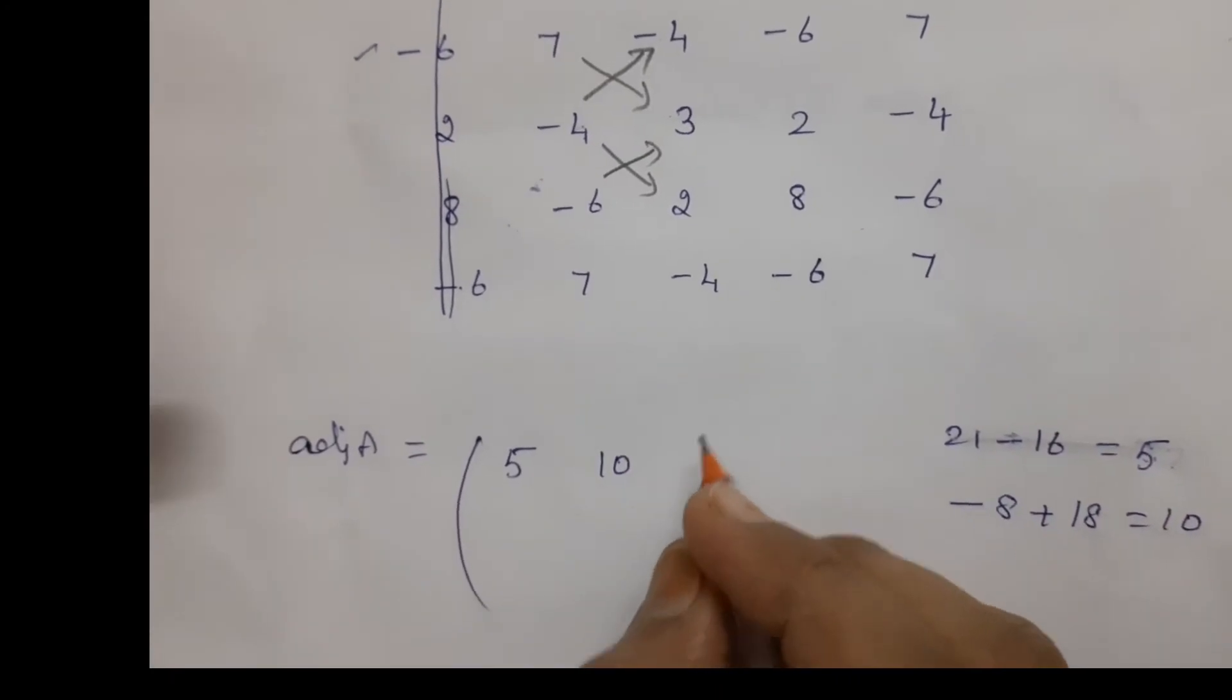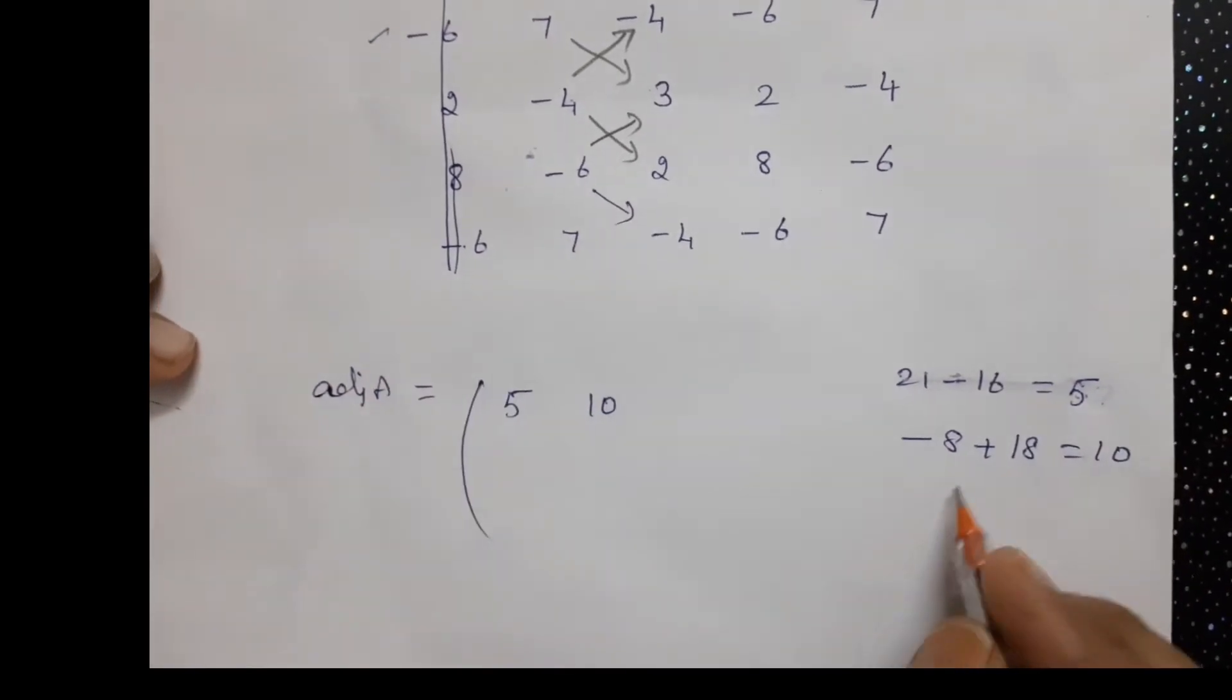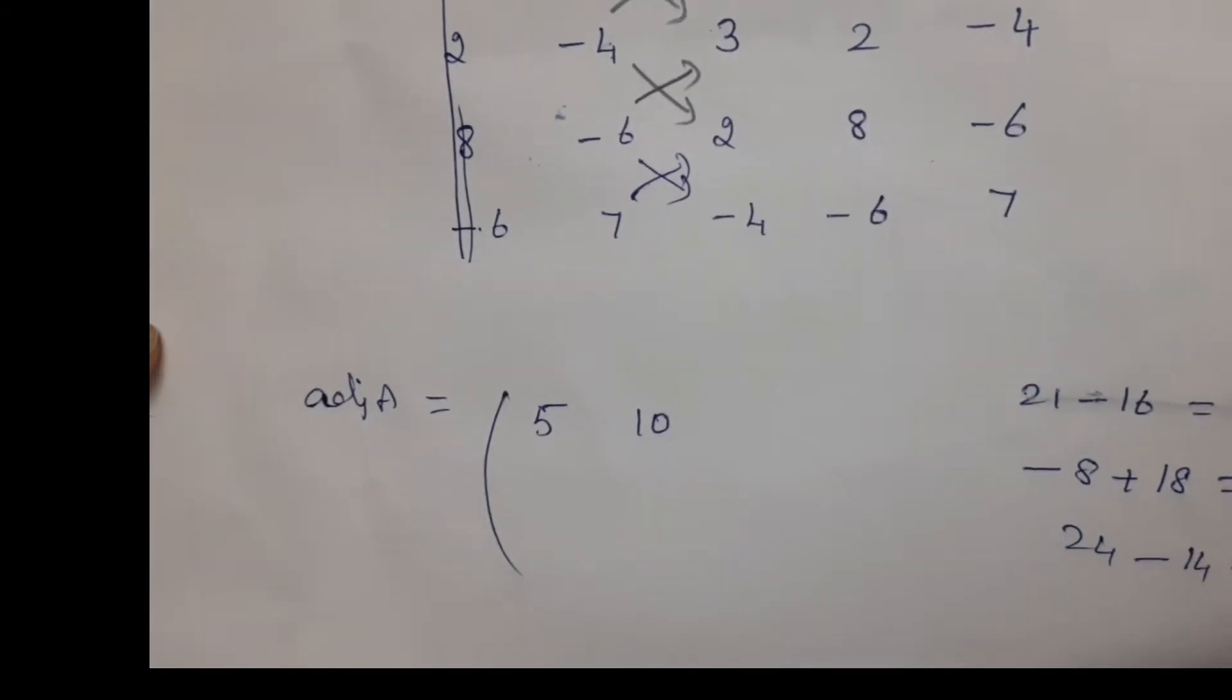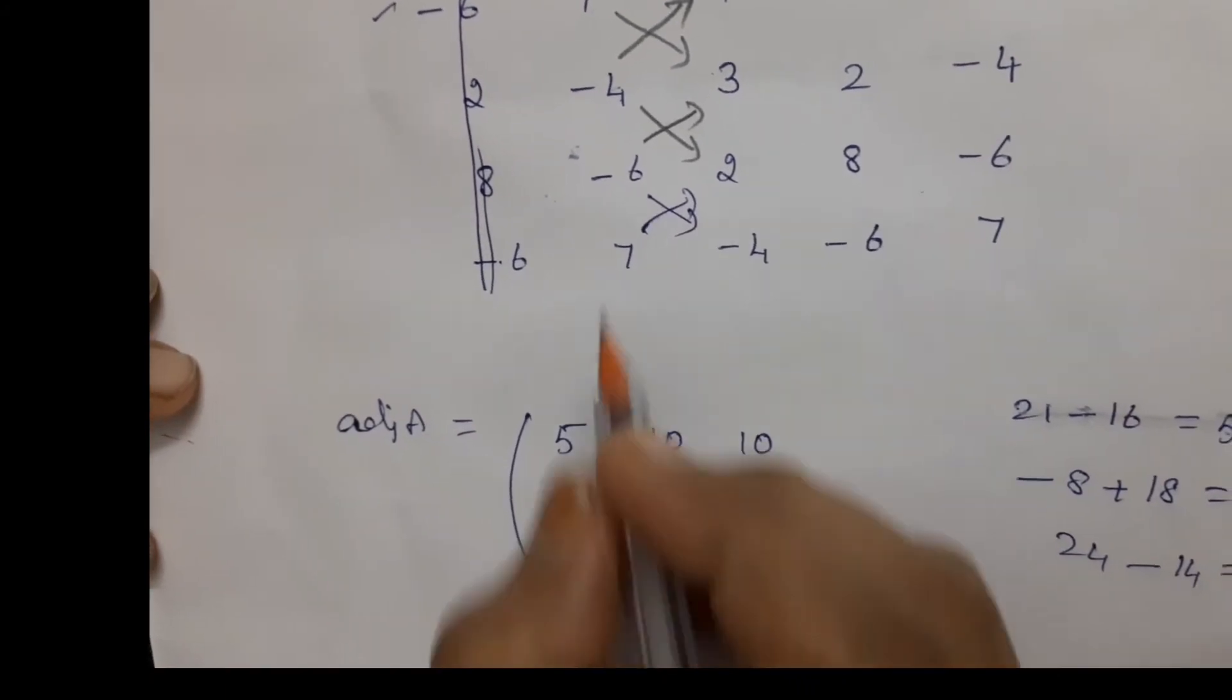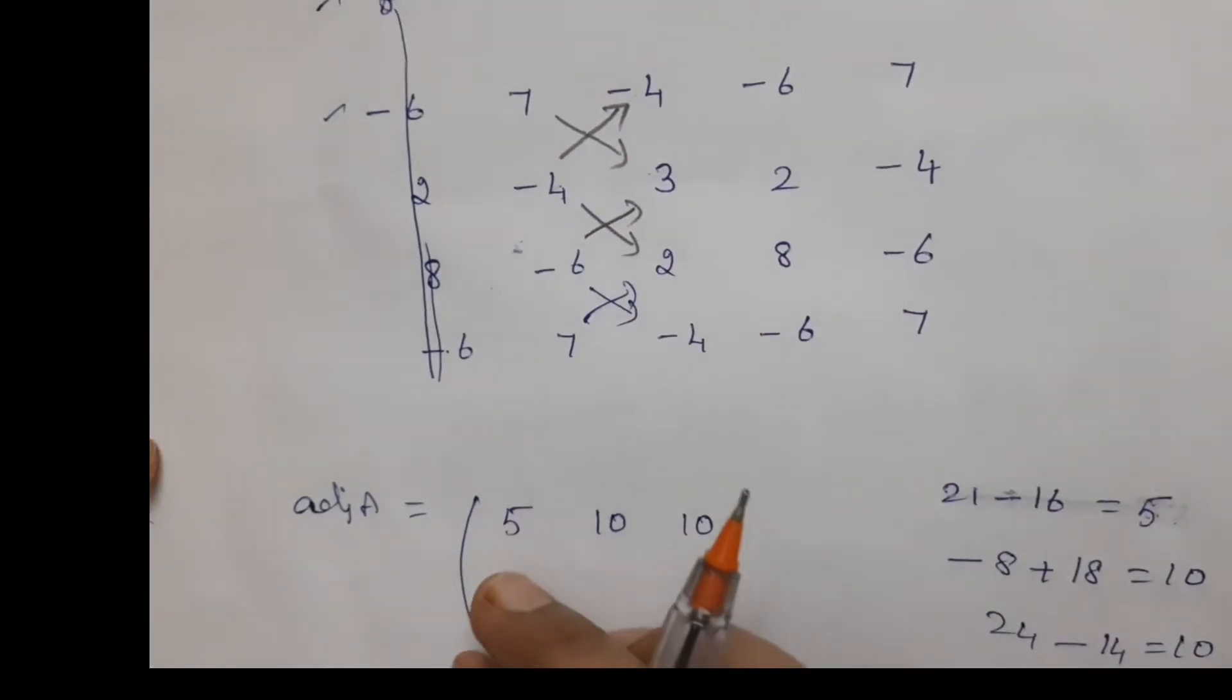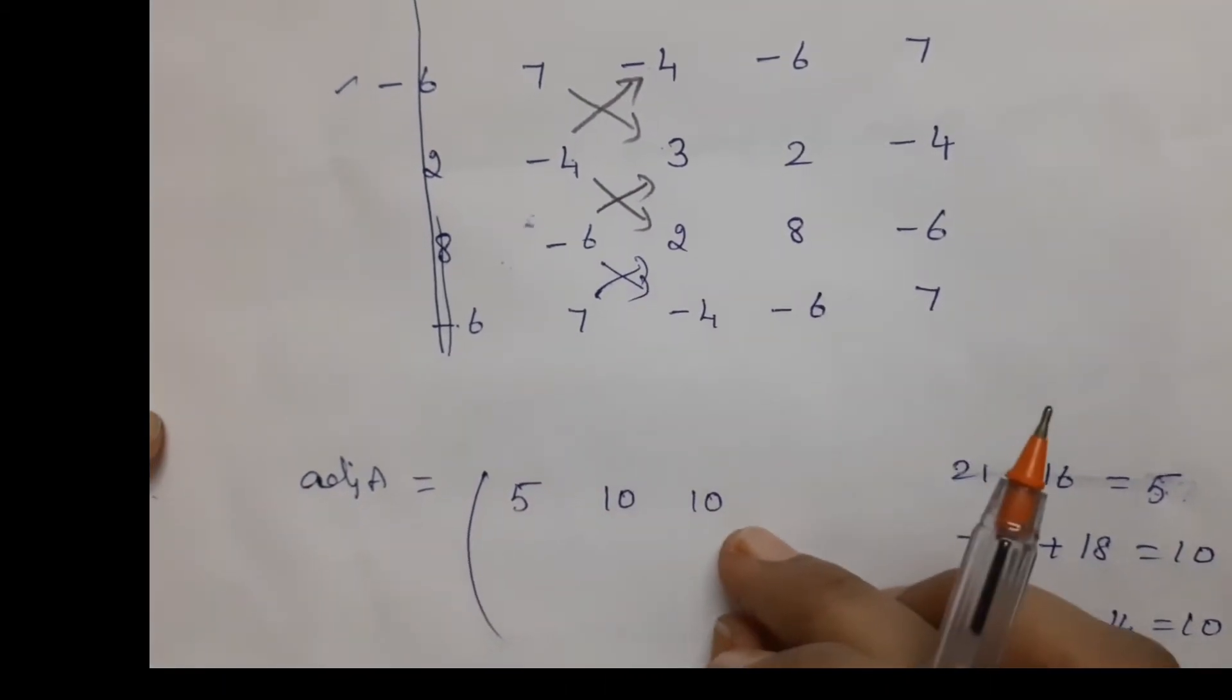Here you write row-wise. And similarly, 24 minus 14 is 10. So 10. And then here, second row, second column calculations are written in the second row.